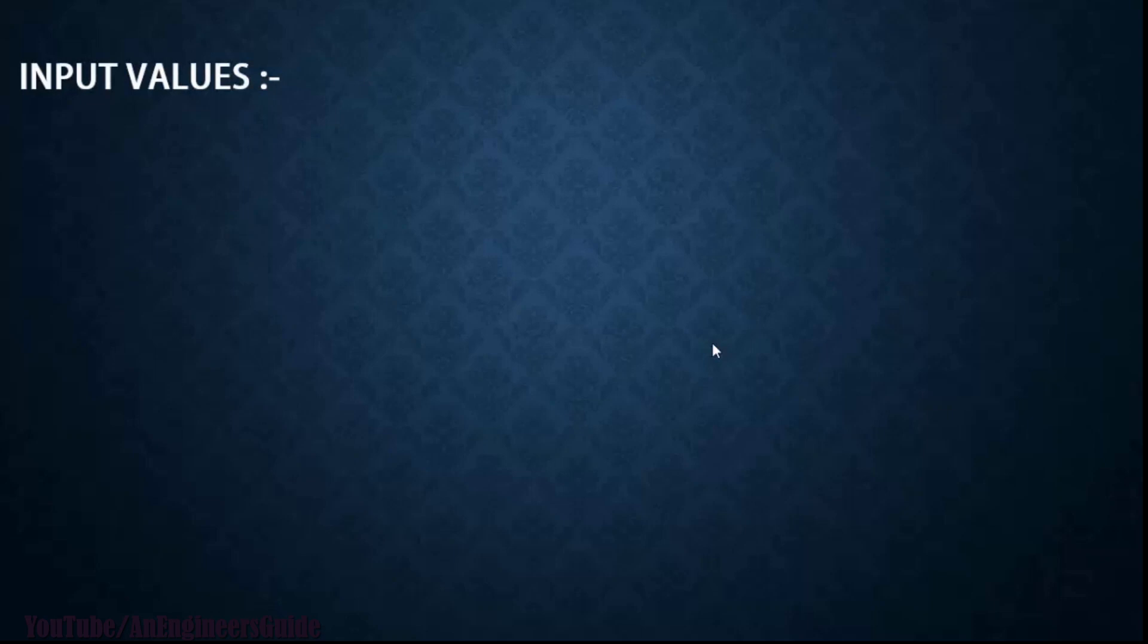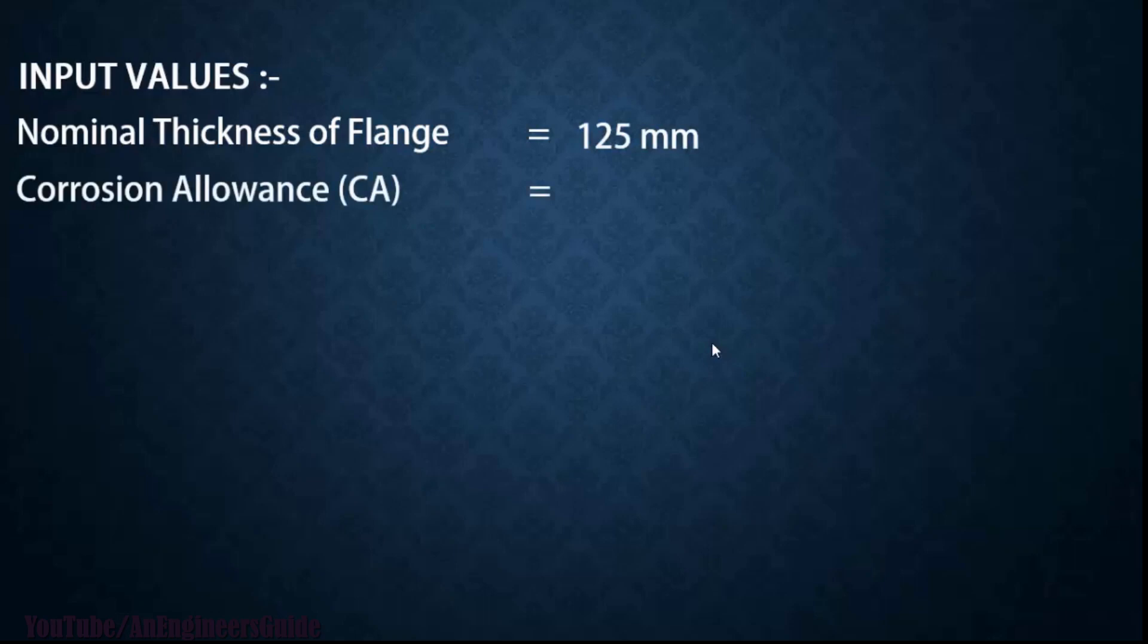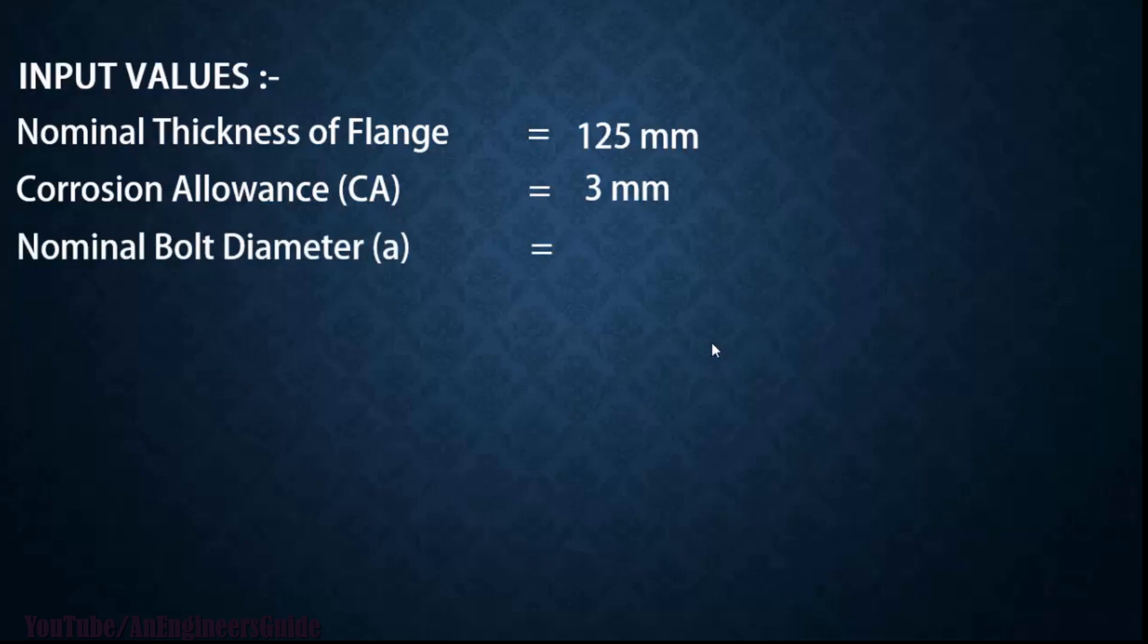First let's see the input values required: nominal thickness of flange which is 125 mm, corrosion allowance we have considered which is 3 mm, and nominal bolt diameter which is 1 and 1/4 inch or 31.75 mm.